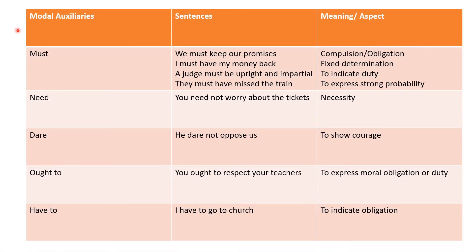A few more examples of modal auxiliaries in sentences. The modal auxiliary 'must': 'We must keep our promises' conveys compulsion or obligation. 'I must have my money back' conveys fixed determination. 'A judge must be upright and impartial' indicates duty. 'They must have missed the train' expresses strong probability.